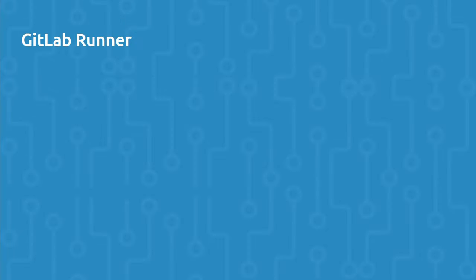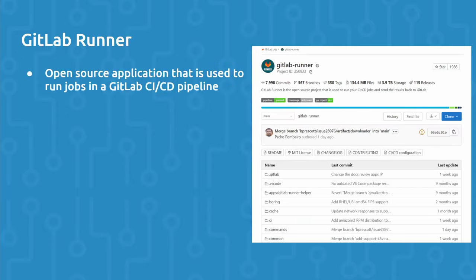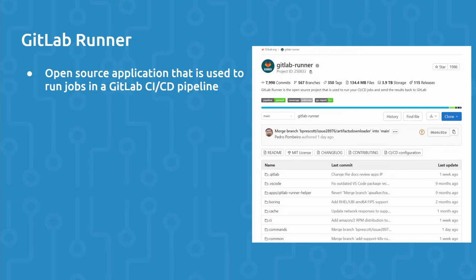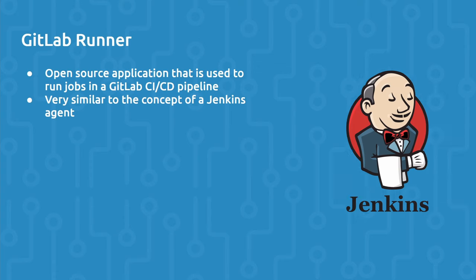Let's begin by getting familiar with what GitLab Runner is and how it works. GitLab Runner is an open source application that is used to run jobs in a GitLab CI/CD pipeline. And it's very similar to the concept of a Jenkins agent if you've ever worked with Jenkins before.